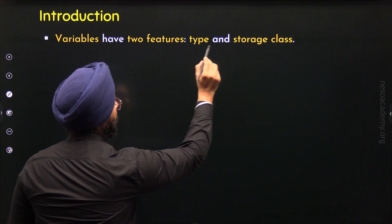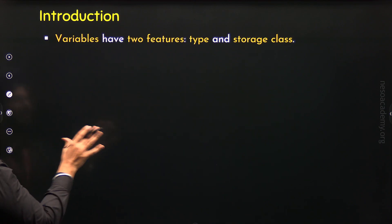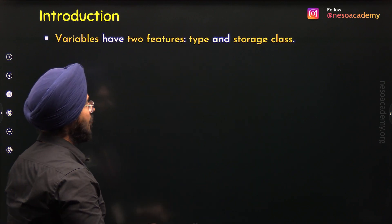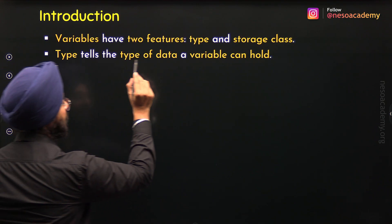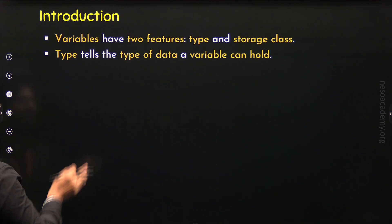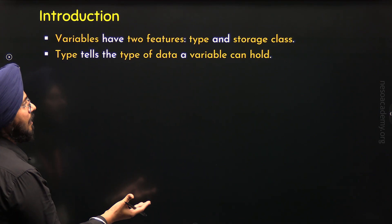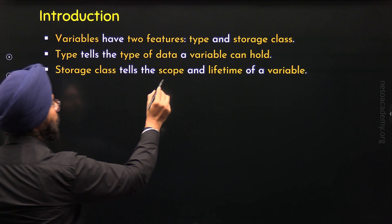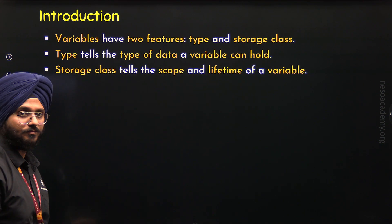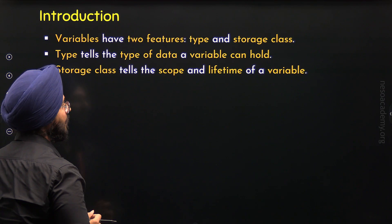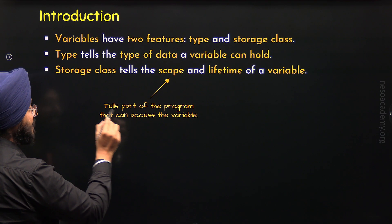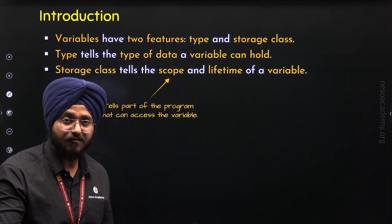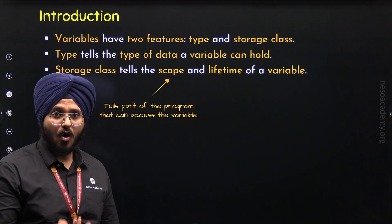Variables have two features: type and storage class. Type tells the type of data a variable can hold. Storage class, on the other hand, tells the scope and lifetime of a variable. Scope tells the part of the program that can access the variable — the area where the variable is accessible or visible.